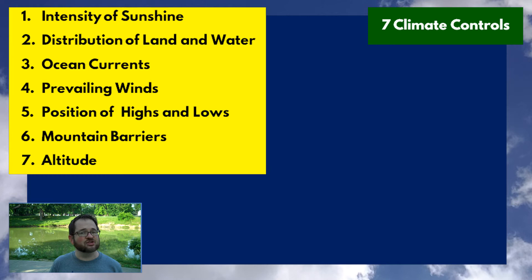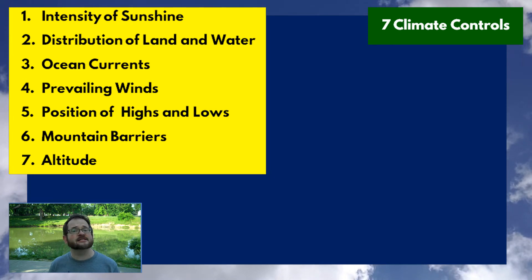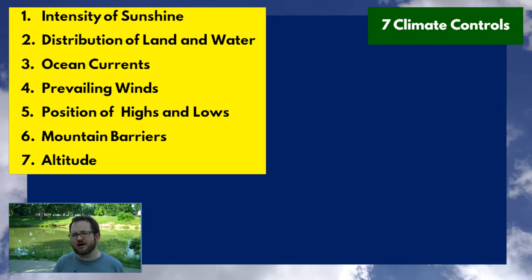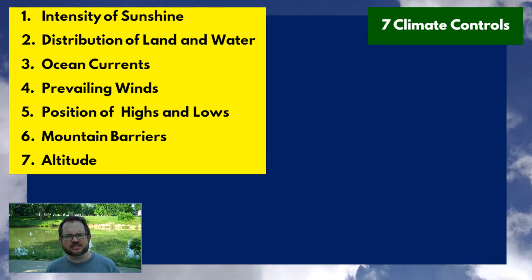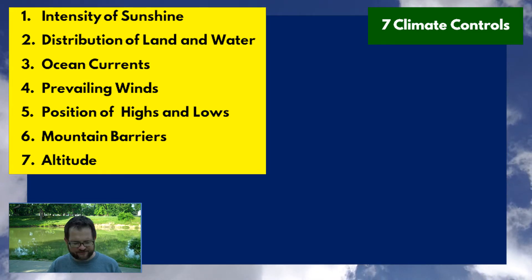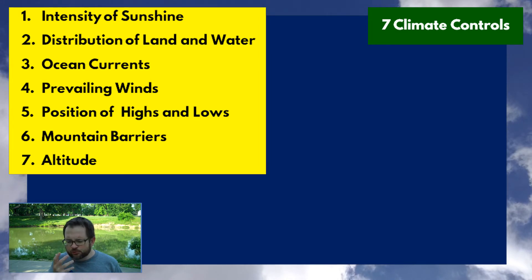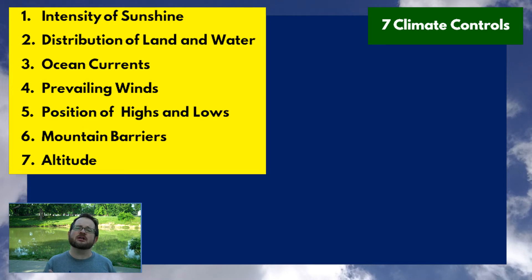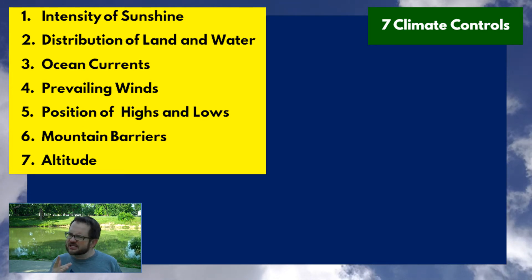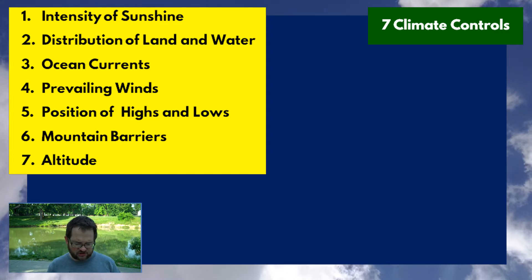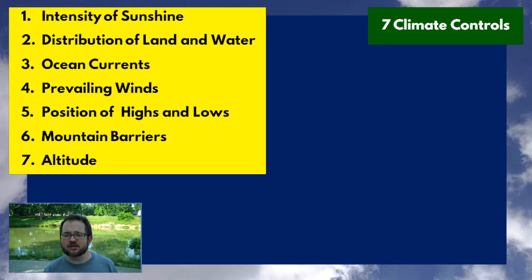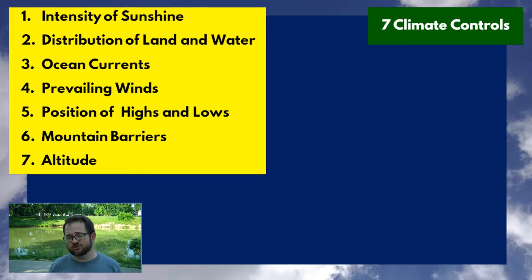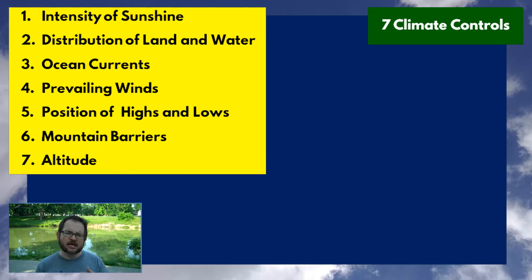Here's part two of the climate controls and classifications part of the lecture. We're moving on to our seven climate controls. This material works well at the end of the course in the eighth module because it's cumulative — it helps us understand how everything we've been learning fits together. Broadly speaking, there are seven main factors that control the climate of a region: intensity of sunlight, distribution of land and water, ocean currents, prevailing winds, position of highs and lows, mountain barriers, and altitude.